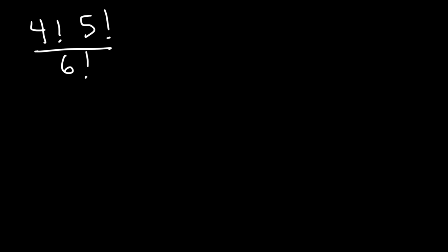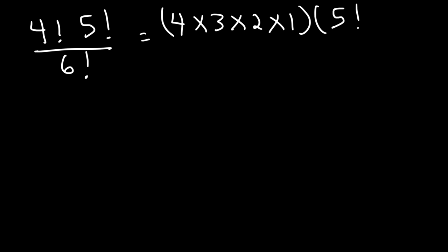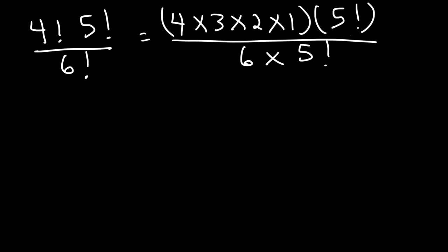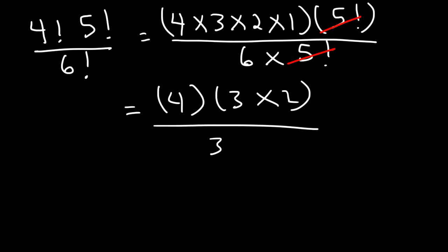Let's work on another similar example. So 4 factorial times 5 factorial divided by 6 factorial — go ahead and simplify. Now 4 factorial is 4 times 3 times 2 times 1, and 5 factorial I'm going to leave the way it is. 6 factorial is 6 times 5 factorial, so I can cancel 5 factorial. Now the 1 is not going to change anything so I can drop that. So I have 4 times 3 times 2, and 6 I can write as 3 times 2, which can be cancelled. So the final answer is 4.